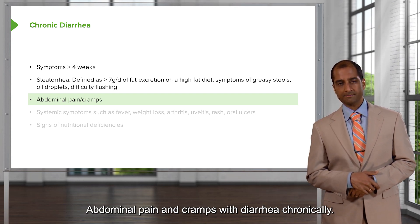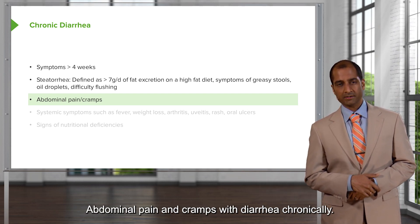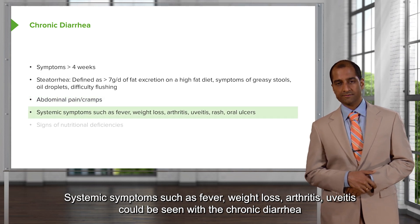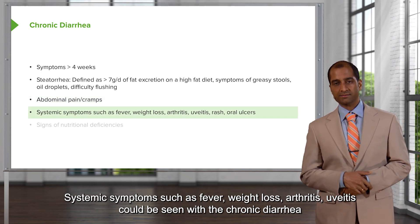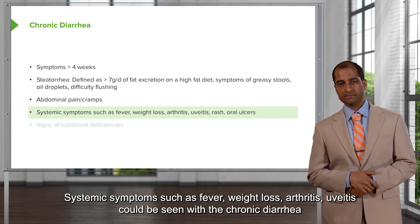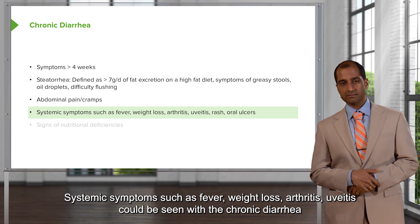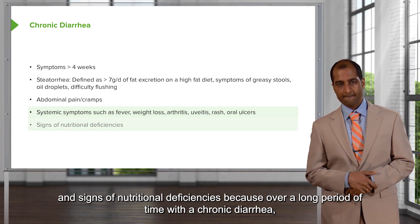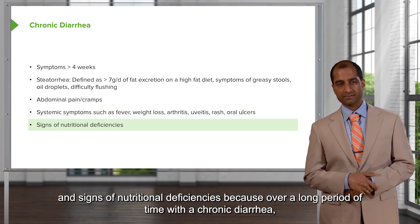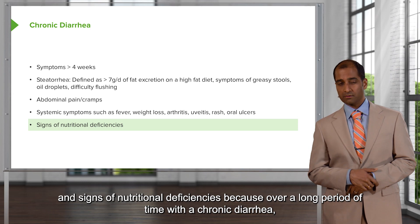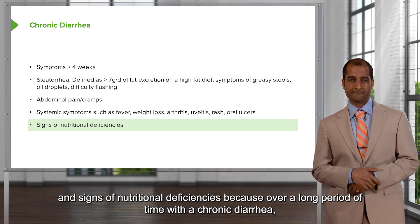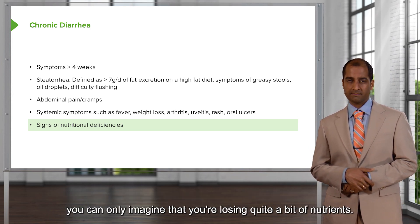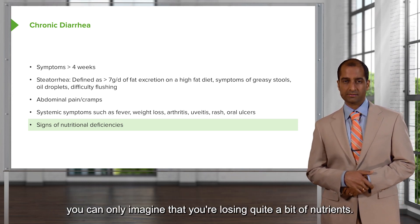Abdominal pain and cramps with diarrhea, chronically. Systemic symptoms such as fever, weight loss, arthritis, and uveitis could be seen with chronic diarrhea. And signs of nutritional deficiencies, because over a long period of time with chronic diarrhea, you can only imagine that you're losing quite a bit of nutrients.